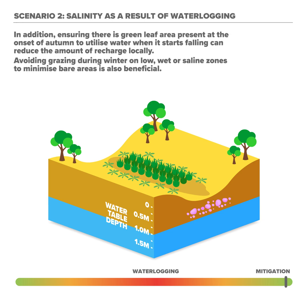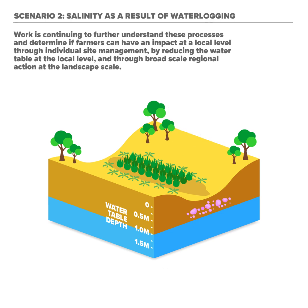In addition, ensuring there is green leaf area present at the onset of autumn to utilise water when it starts falling can reduce the amount of recharge locally. Avoiding grazing during winter on low, wet or saline zones to minimise bare areas is also beneficial. These processes can determine if farmers can have an impact at a local level through individual site management by reducing the water table at the local level and through broad scale regional action at the landscape scale.